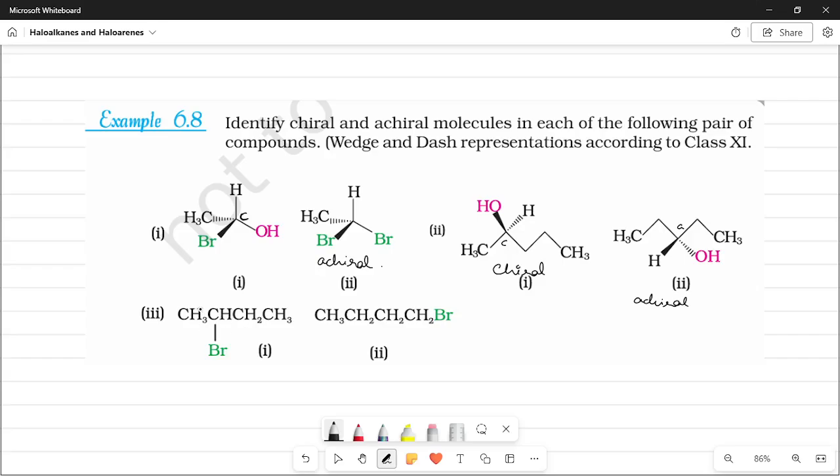Here, this particular carbon has a methyl, ethyl, bromine and hydrogen. So it's going to be chiral. So this is chiral. This is going to be achiral. That's it. Super simple, right?